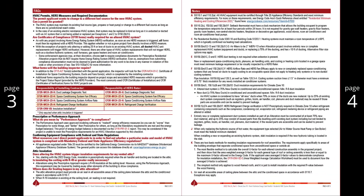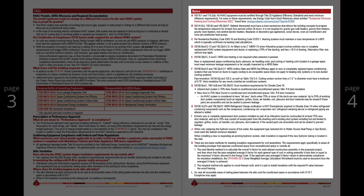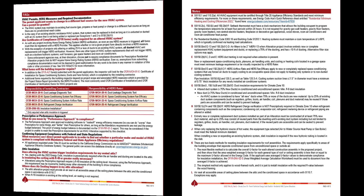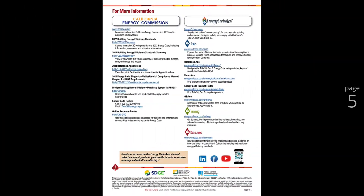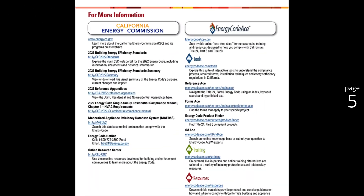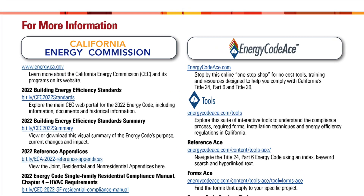Page four provides a full list of footnotes cited in the energy code tables on pages one and two. Page five, the final page of the checklist, provides a list of direct links to a variety of energy code resources on the checklist topic.